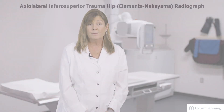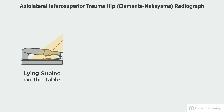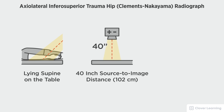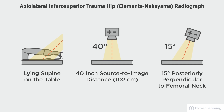In this view we will be demonstrating an axial lateral inferior-superior trauma hip, the Clemens-Nakayama view. This view should be performed with a patient lying supine on the table, a 40-inch source-to-image distance, and tube angle directed 15 degrees posteriorly and aligned perpendicular to the femoral neck.